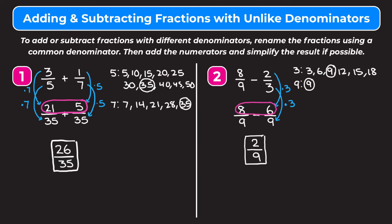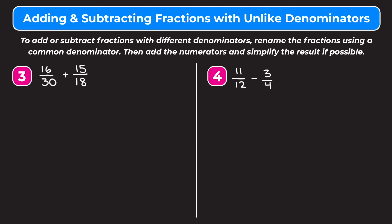Let's take a look at a couple more examples. For example 3 we have 16 thirtieths plus 15 eighteenths. It's always a good rule of thumb to simplify our fractions before we add or subtract them. We can simplify 16 thirtieths by dividing the top and bottom by 2: 16 divided by 2 is 8 and 30 divided by 2 is 15, so we get 8 fifteenths.